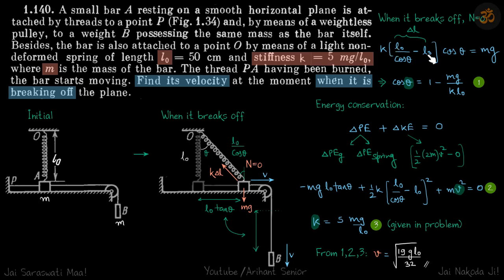So k delta l cos theta equals mg, where delta l is final length minus initial length, which gives this. Now my energy conservation.